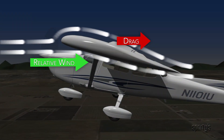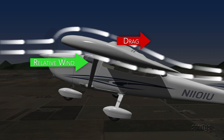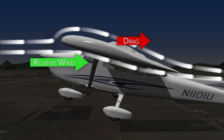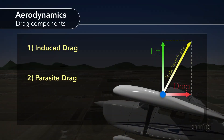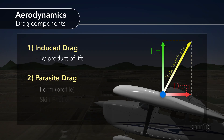Drag is produced by moving the airplane through the air and is considered to act parallel to the relative wind and rearward. Drag has two components: induced drag and parasite drag. Induced drag is caused by generating lift, and parasite drag is the price paid to move the airplane through the air.